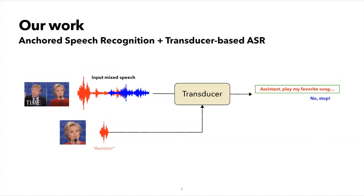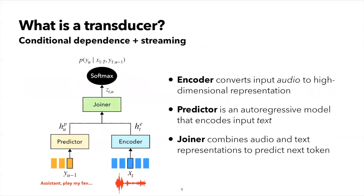In this paper, our objective is to build anchored speech recognition systems with neural transducers. Neural transducers have become the standard modeling choice for on-device ASR in the industry. Put very briefly, transducers are popular because they combine the streaming capabilities of CTC models and the conditional dependence of attention-based encoder decoders. This is achieved by factoring the conditional likelihood into three parts: an encoder, a prediction network, and a joiner. The encoder processes input speech, the prediction network autoregressively models the label sequence, and the joiner combines these representations and outputs a distribution over the token vocabulary at each time step.